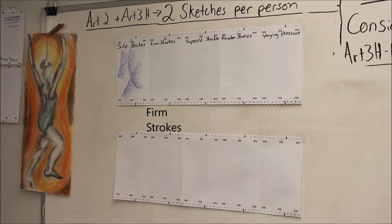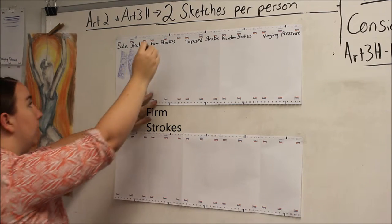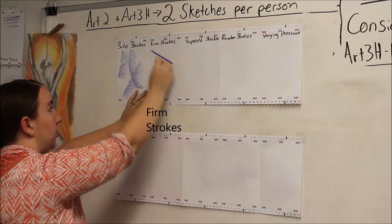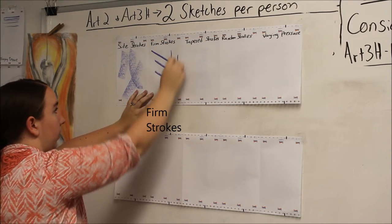For firm strokes, if you've got your pastel where it's got like the corners to it, just pick a corner. If it's been worn down, then you can just use the tip of the worn down end. Either way is fine. But you're going to hold it firmly and push down with firm pressure just to make solid lines.